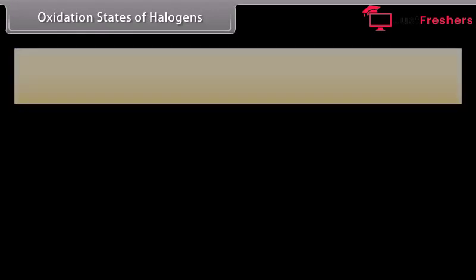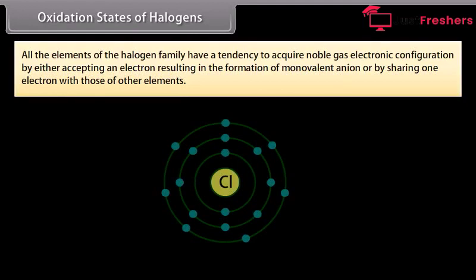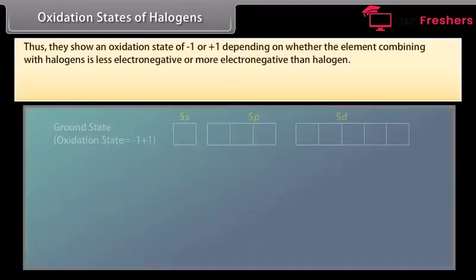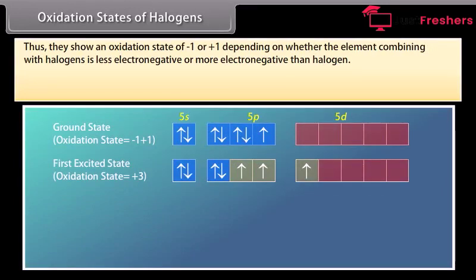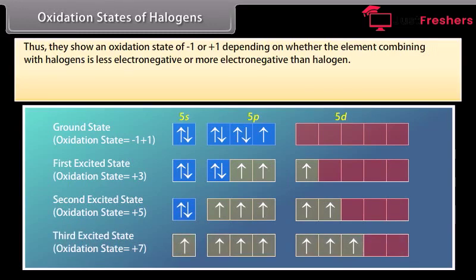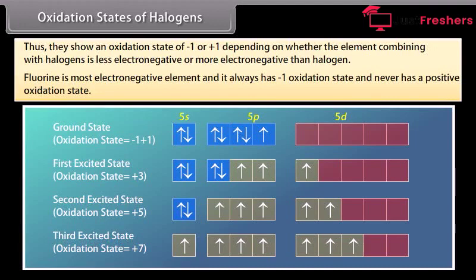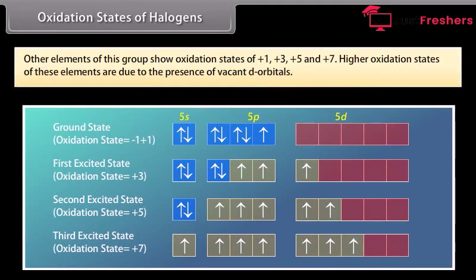All elements of the halogen family have a tendency to acquire noble gas electronic configuration by either accepting an electron, forming a monovalent anion, or by sharing one electron. Thus they show an oxidation state of minus 1 or plus 1. Fluorine is the most electronegative element and always has a minus 1 oxidation state, never a positive one. Higher oxidation states are not possible in fluorine as it does not have vacant d orbitals. Other elements of this group show oxidation states of plus 1, plus 3, plus 5 and plus 7, due to the presence of vacant d orbitals.